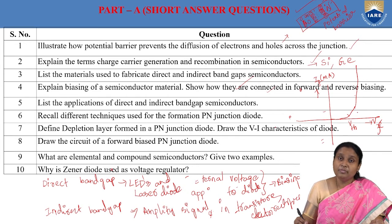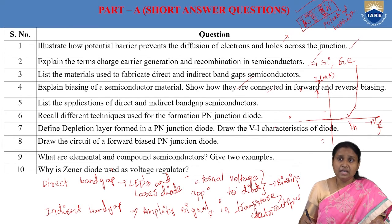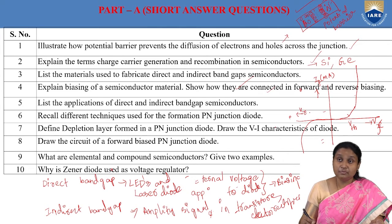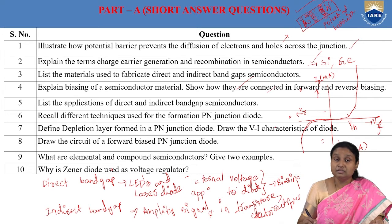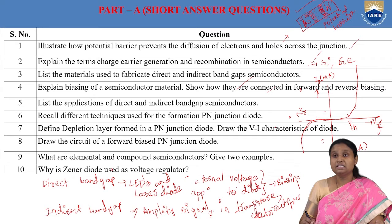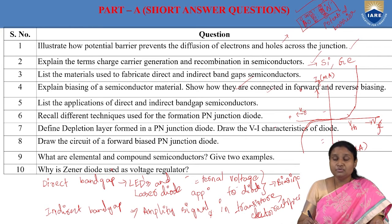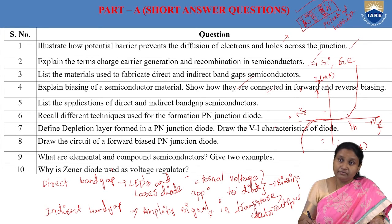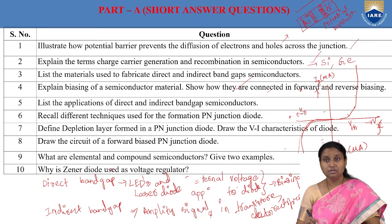In reverse biasing, when we apply reverse voltage there is a very small current in microamps due to minority charge carriers — called leakage current. If we go to a very high reverse bias voltage, breakdown of the junction takes place, the junction gets destroyed, and we have a large reverse current flowing across the diode.